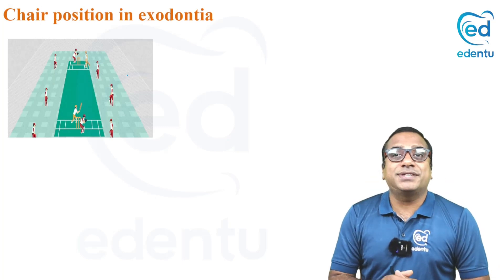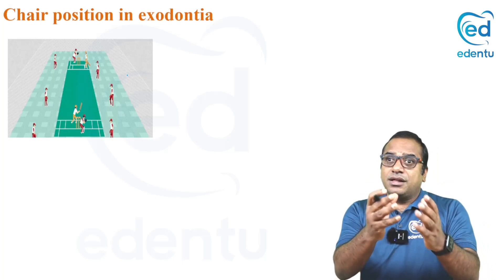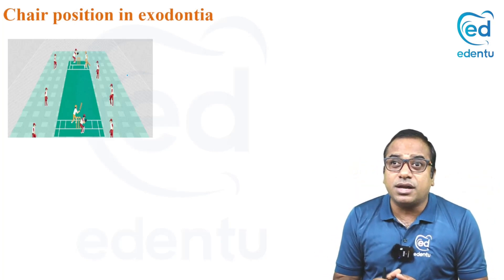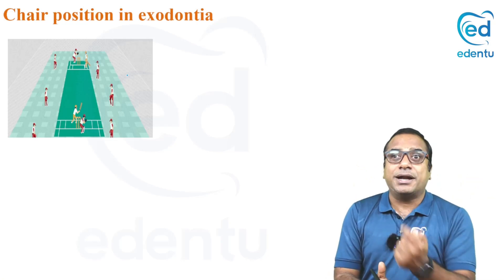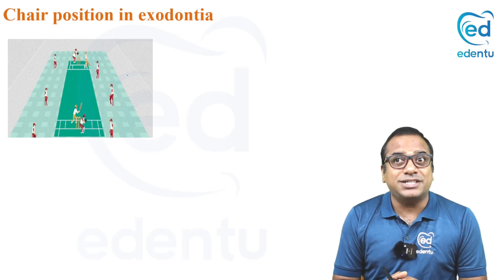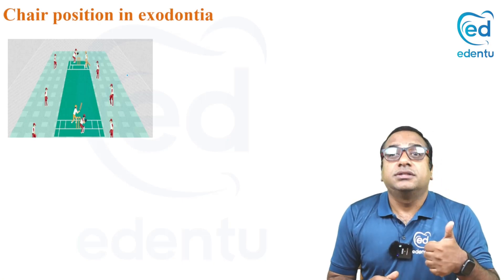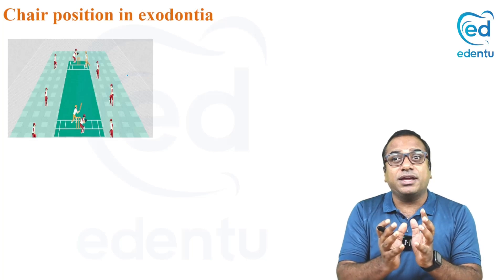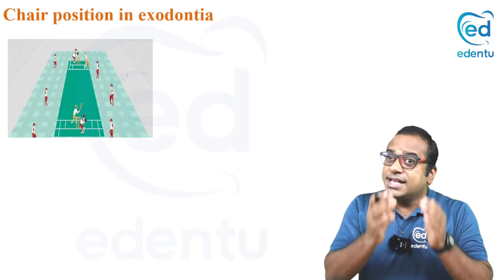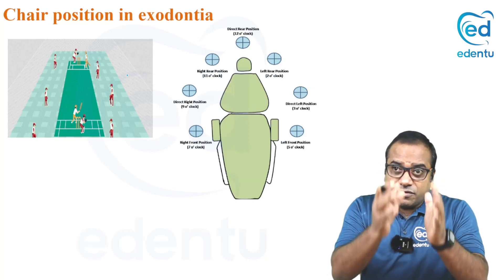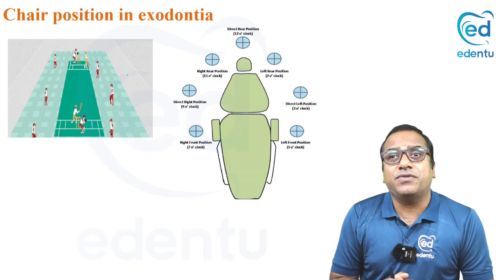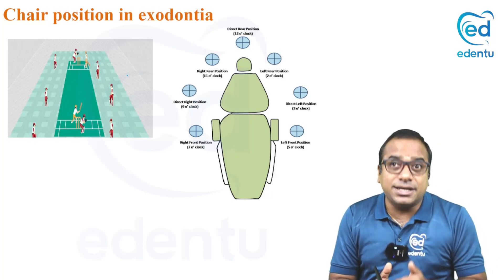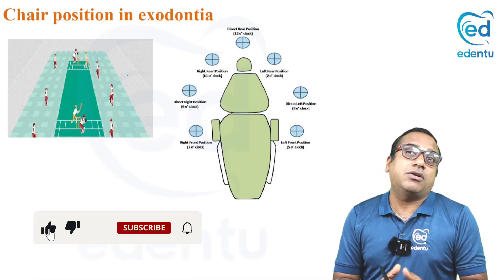To begin with, consider a cricket match. Around the pitch, the whole fielding team is set up — there is a wicketkeeper, a bowler, and players standing around the batsman. They stand in those positions to fulfill their objective: ensure the batsman doesn't take a run and to catch the ball comfortably. Similarly, in extraction the dental chair and tooth is our focus of attention, and we should be placed around it in a way that aids comfortable removal.